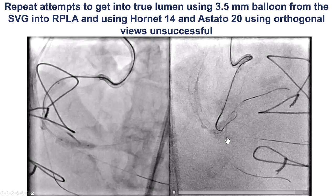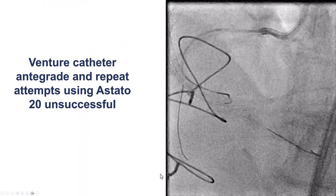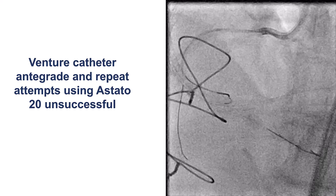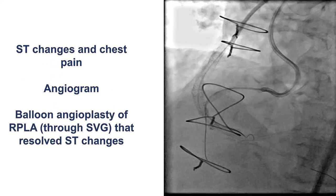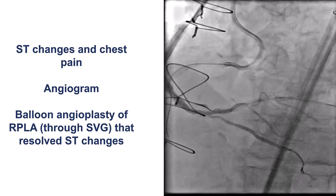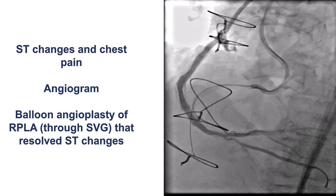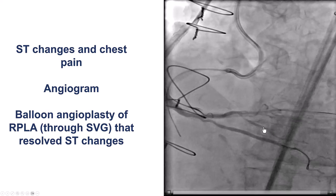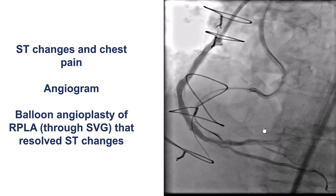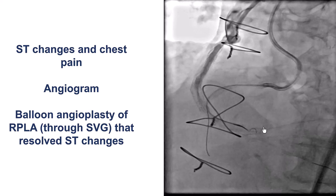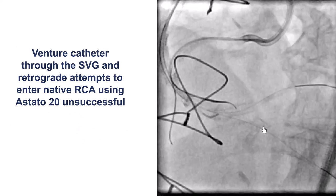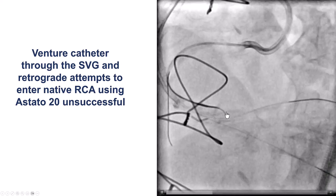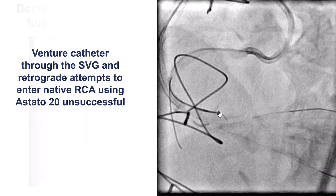The wire seemed to go across around the stent towards the right posterior lateral. We then decided to use the Venture Caster, which can provide very strong support, but once again we were not successful. At this point the patient developed some chest discomfort and had ST segment changes. He was found to have some disruption of the posterior lateral, likely from the extra-plaque wire, and that was why we ballooned it — and once we ballooned it, he was much better. We then decided to try retrograde via the saphenous vein graft using the Venture and the antegrade equipment as a target, but unfortunately we were again not able to puncture.